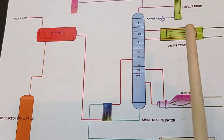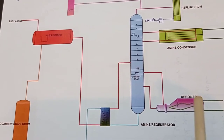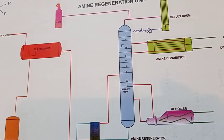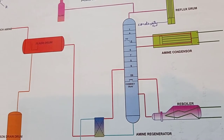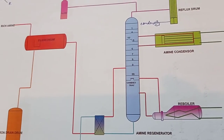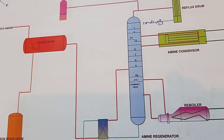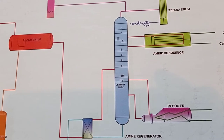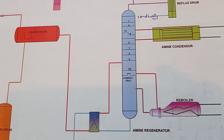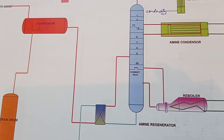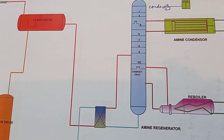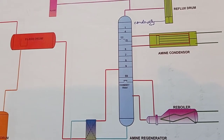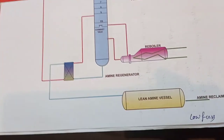In the SRU, H₂S is converted to elemental sulfur. The reboiler heats the amine, while the amine condenser condenses the overhead gas and maintains temperature. The key principle is that H₂S is removed at low pressure and high temperature in the amine regeneration unit and sour water stripper. Conversely, in the acid gas removal unit we maintain high pressure and low temperature to absorb H₂S.